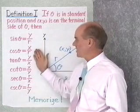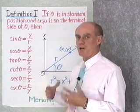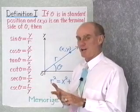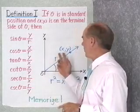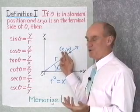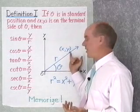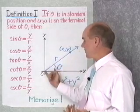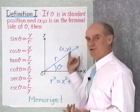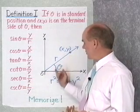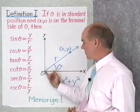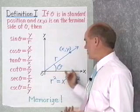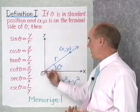As you can see, they're simply all the ratios that you can make out of the three numbers x, y, and r, where x and y are the coordinates of any point on the terminal side of θ, and r is the distance from the origin out to that point. Here's our angle θ in standard position — vertex at the origin, initial side along the positive x-axis.